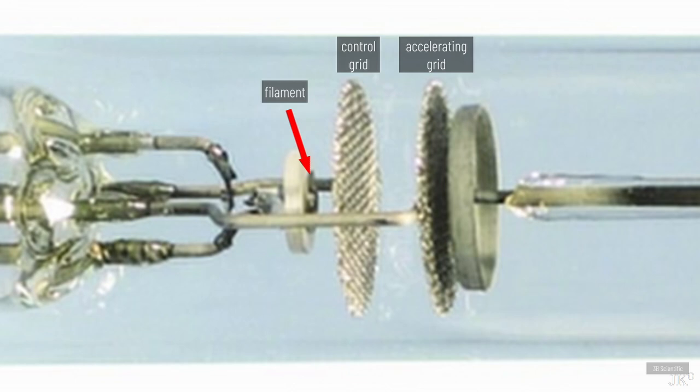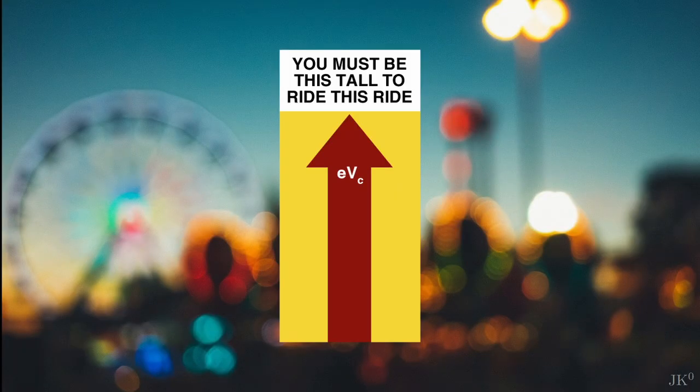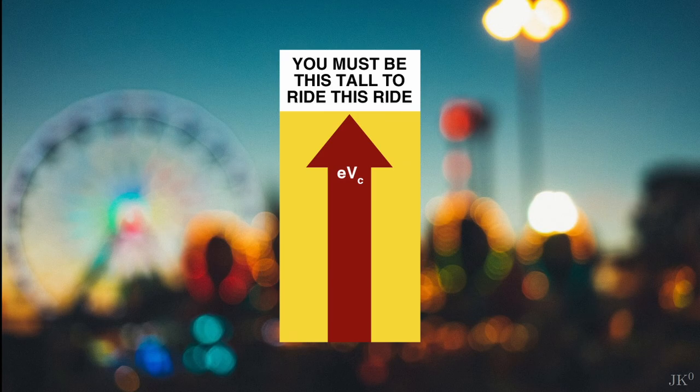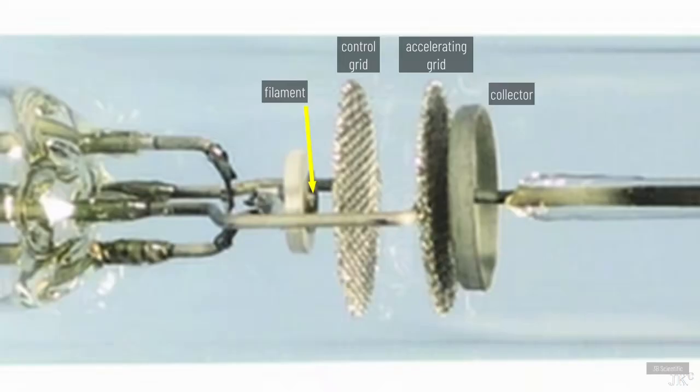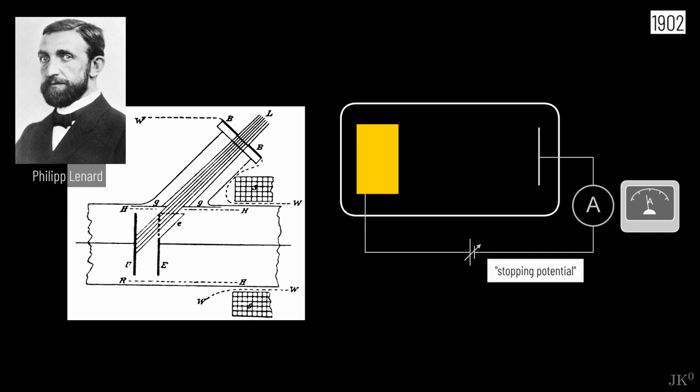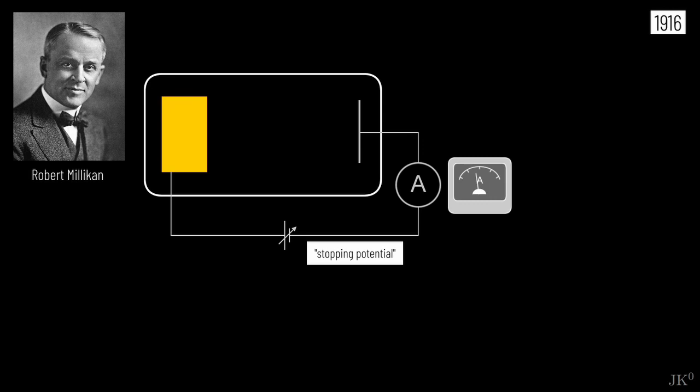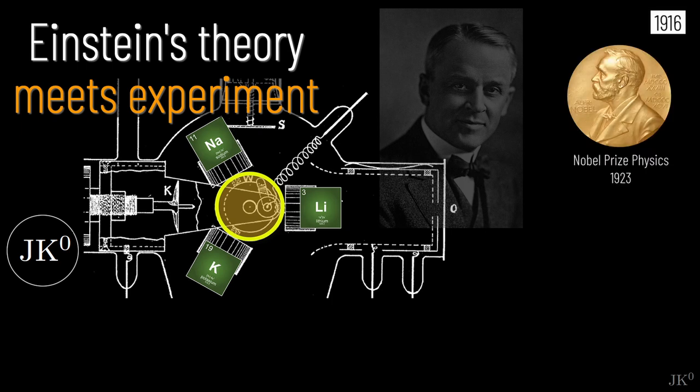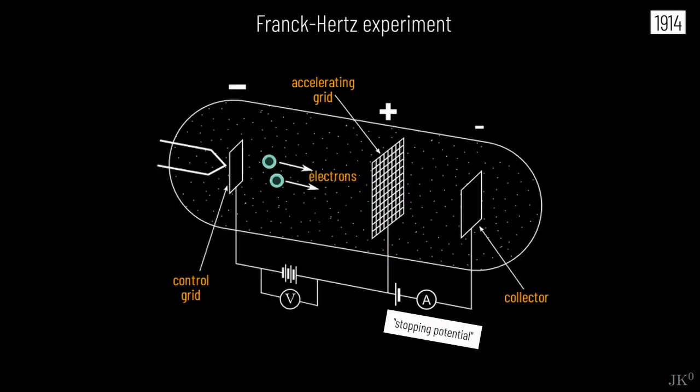Here Franck and Hertz included a way to distinguish these low energy electrons from the normally expected high energy electrons. Just like those popular signs in amusement parks that say, you must be this tall to ride, Franck and Hertz added an electrostatic way to reject low energy electrons. In 1902, Philip Lenard introduced the so-called stopping potential to slow electrons down in the photoelectric effect. The same idea was later used by Robert Millikan to determine the kinetic energy of photoelectrons, which led him to confirm Einstein's predictions and win the Nobel Prize.